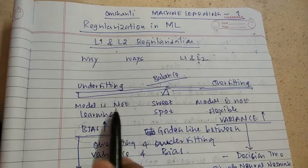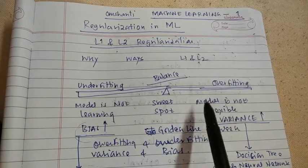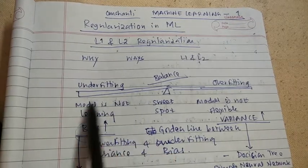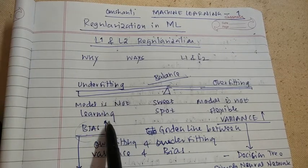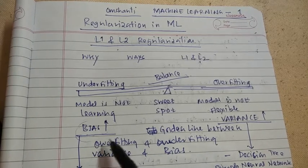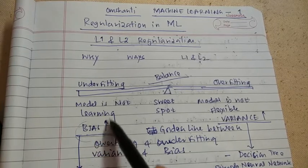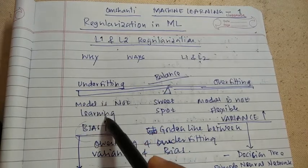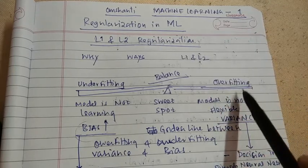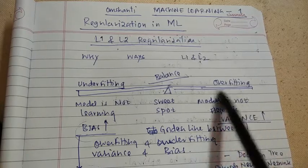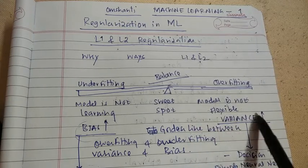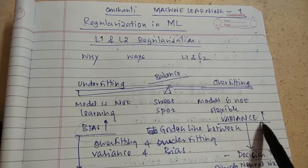Whenever we are choosing any machine learning model, we have to find the balance between overfitting and underfitting. Underfitting means the model is not learning — the error that occurs because of simple assumptions is called bias, which can cause underfitting. Overfitting means the model tries to fit each and every point and is not generalized. The error that occurs because of the complexity of the model is called variance.